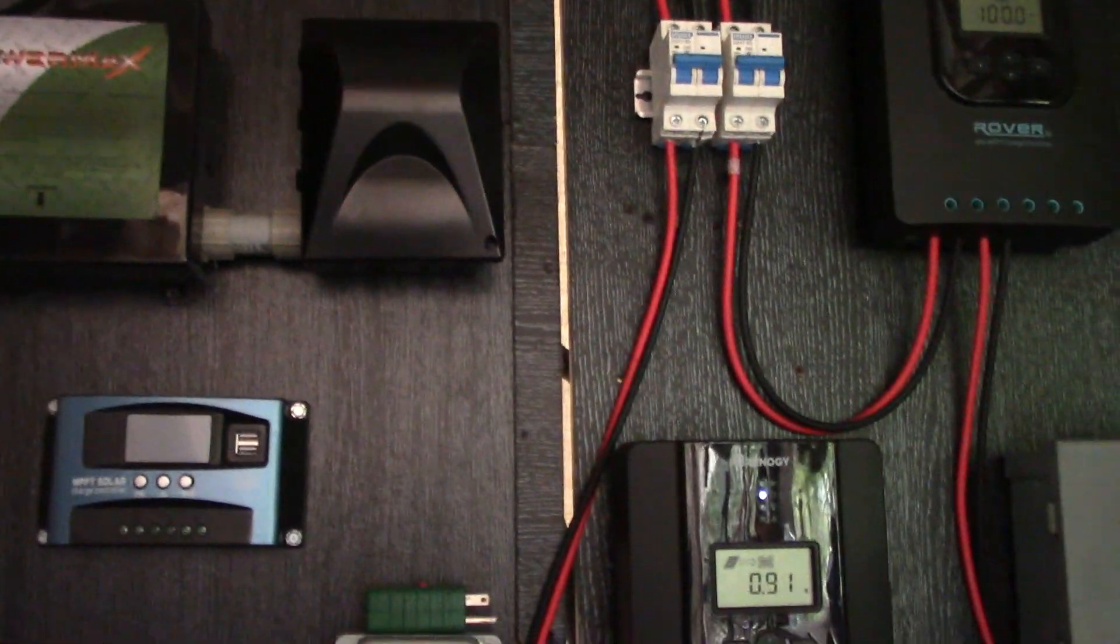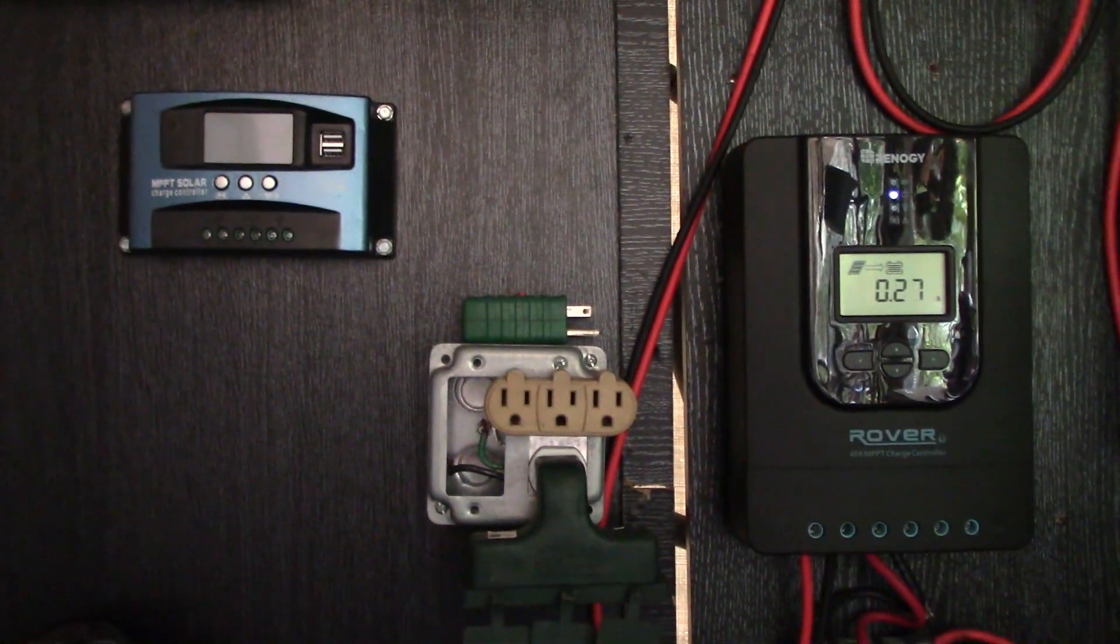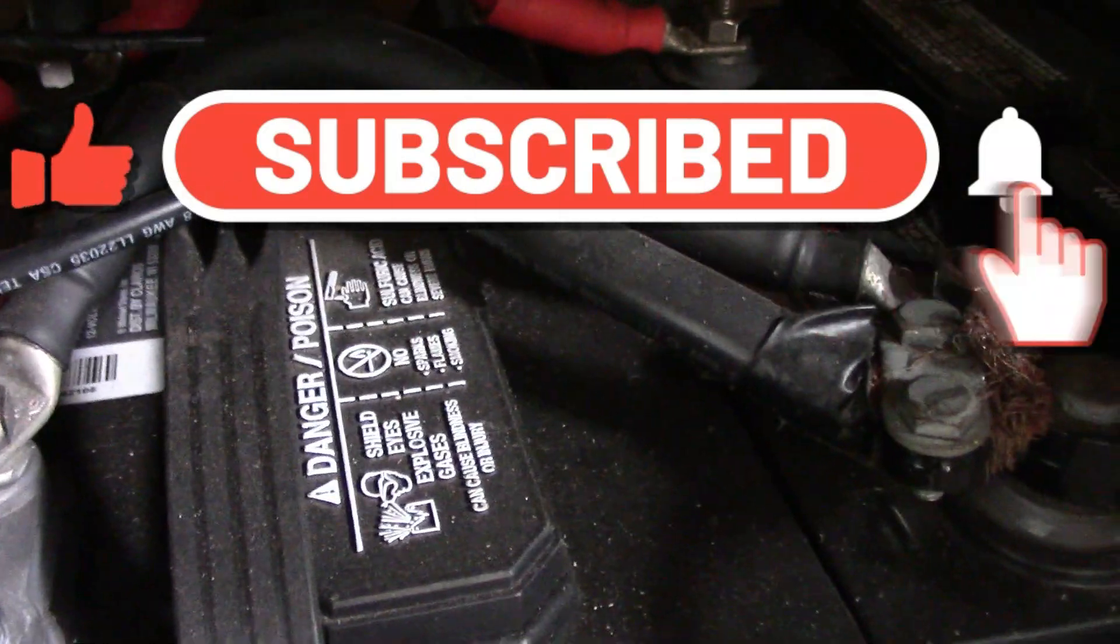This is connected to an automatic transfer switch over there. This little charge controller, the blue one there, has nothing to do with all of this - this is the solar setup over here. Down here is the battery bank that we have. They're all wired together, five of them over there.